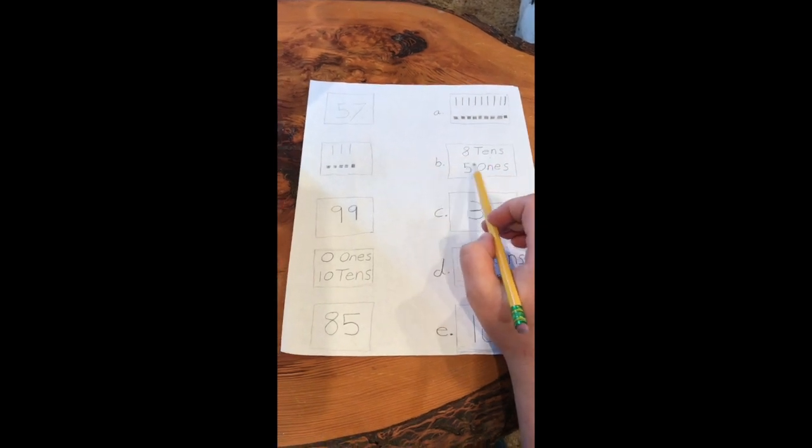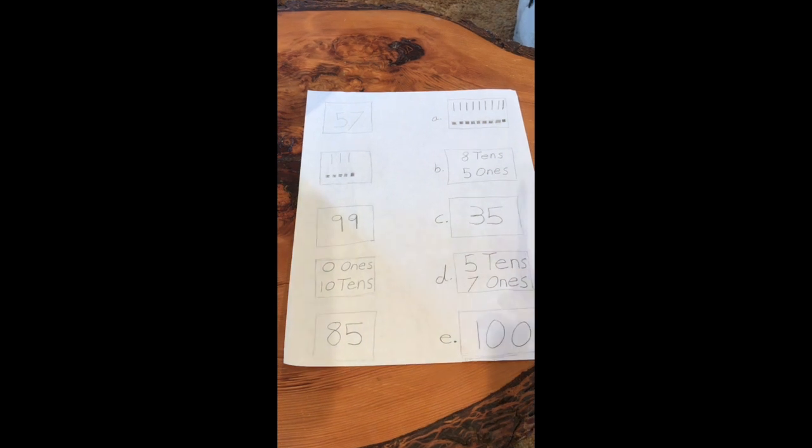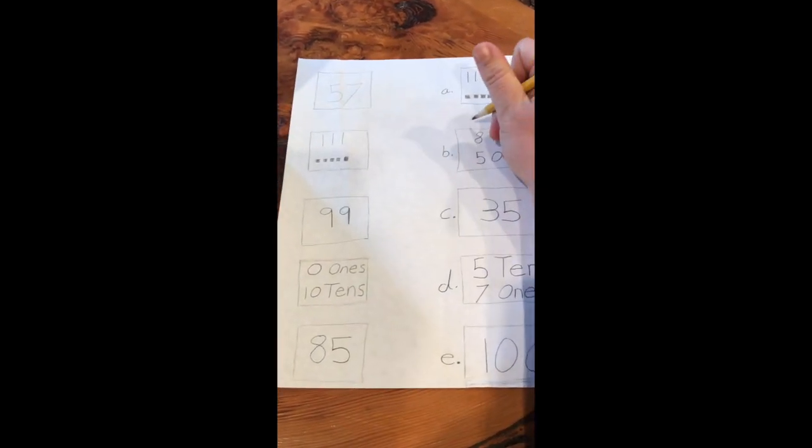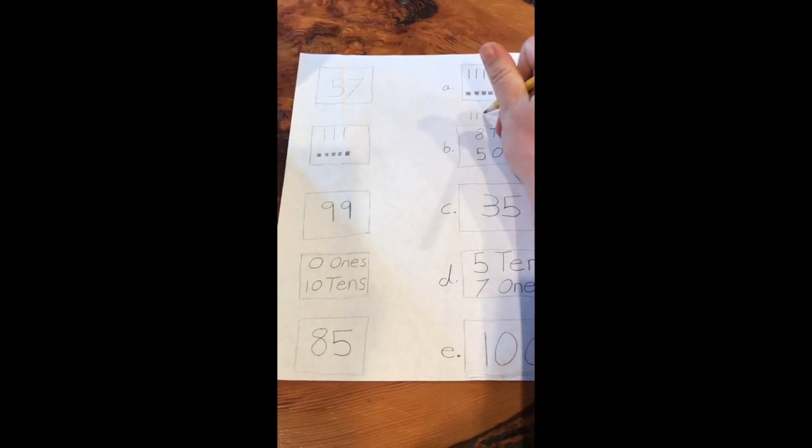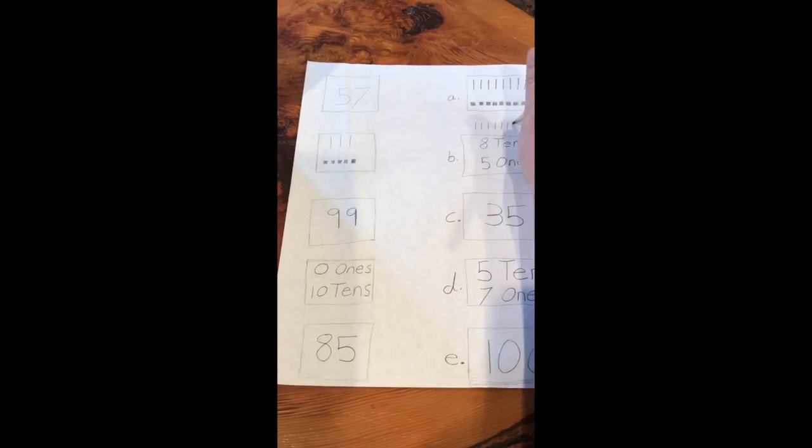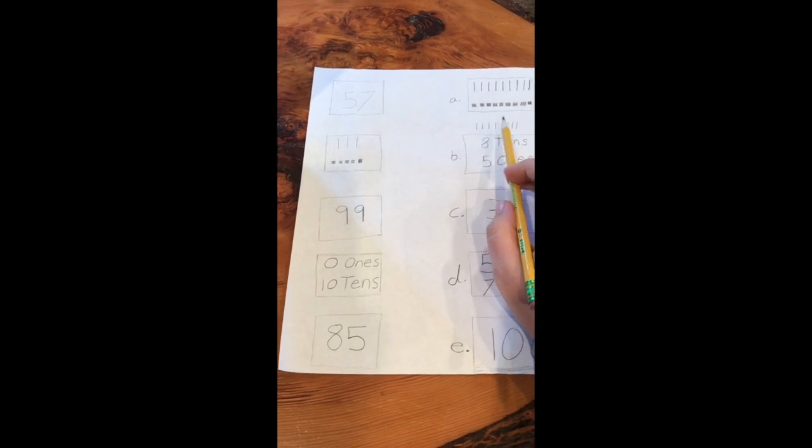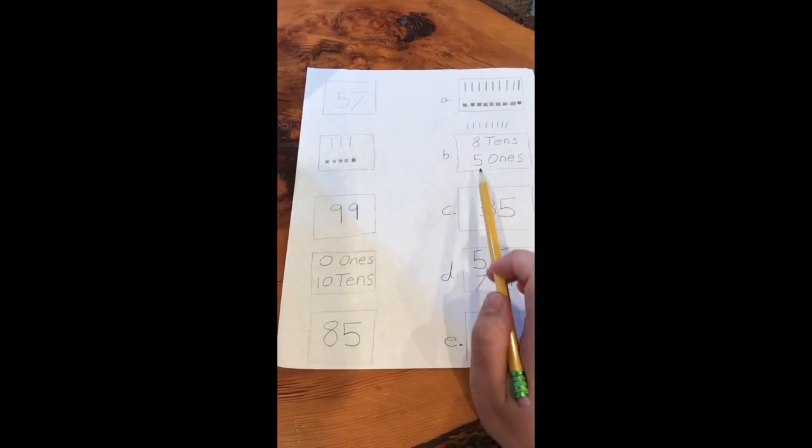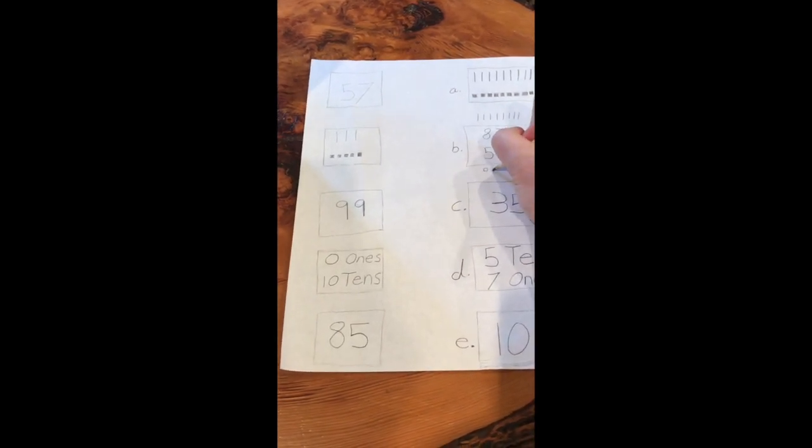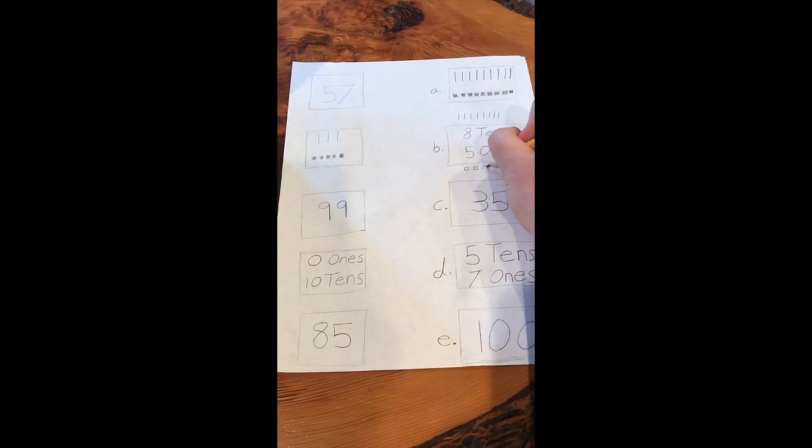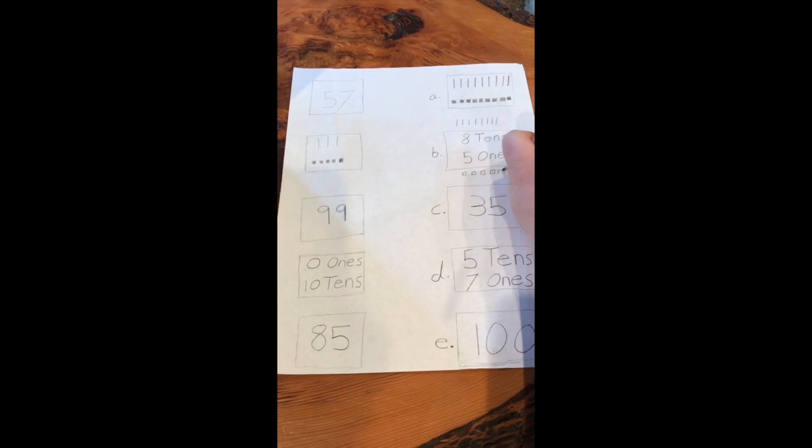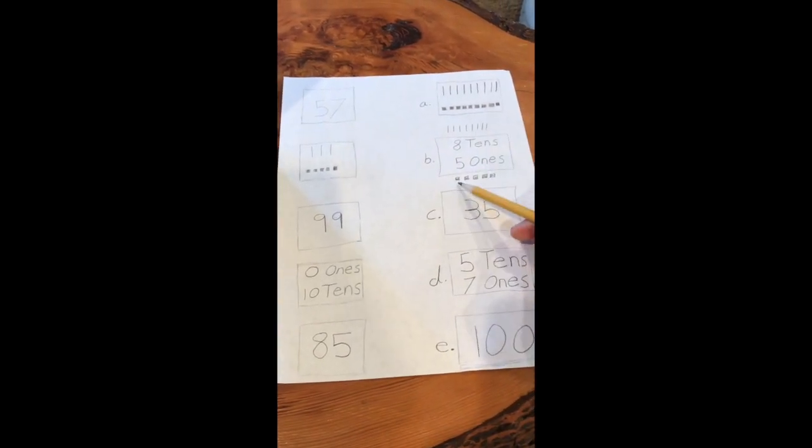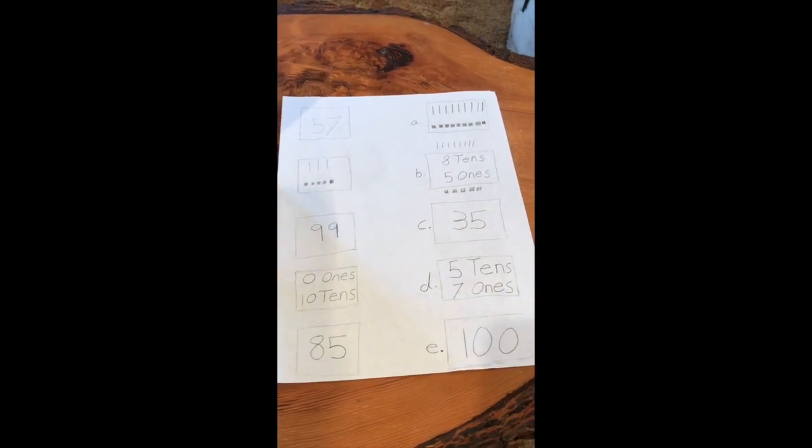So this one says 8 tens, 5 ones. I'm gonna think in my head, how much is 8 tens? If you need to, you can draw. I'm gonna do it above it. Counting the tens: 10, 20, 30, 40, 50, 60, 70, 80. 8 tens equals 80. And then 5 ones: 1, 2, 3, 4, 5. So I have 80, 81, 82, 83, 84, 85. That's not 57.